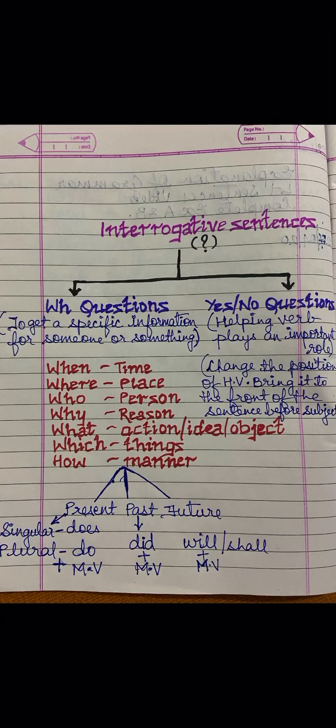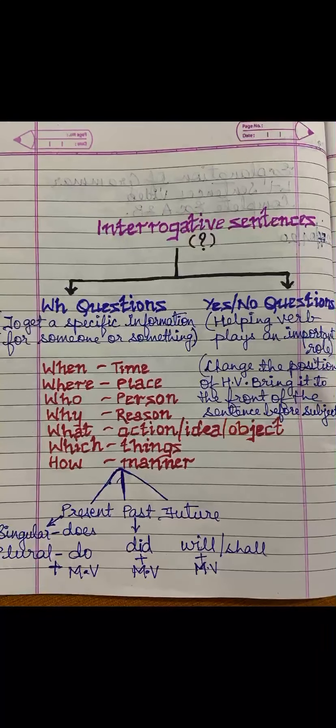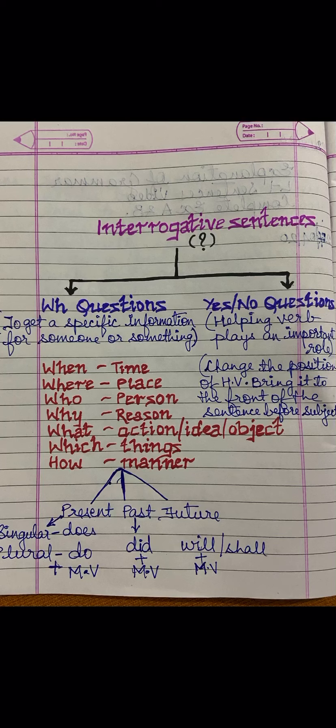Good morning children. In my previous video, you have learnt different kinds of sentences — what is a sentence, declarative, interrogative, exclamatory and imperative sentences. You have also learnt subject and predicate. Now we move to our next topic: how to form interrogative sentences.